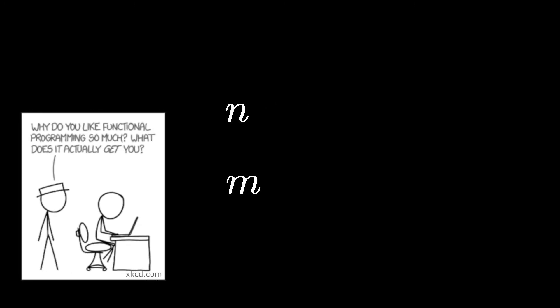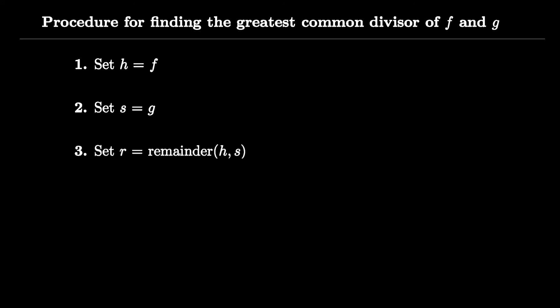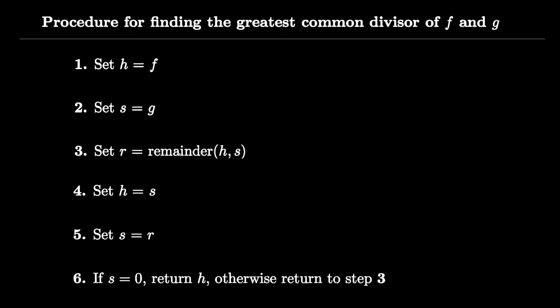If someone hands you two integers and asks you to find the greatest common divisor and you don't feel like factoring them into primes, there's a procedure you can follow with numbered instructions. You just follow the directions, work through a series of long division problems, and when you finish the procedure you find a number that is the greatest common divisor. Each step of that procedure contains information about the greatest common divisor.